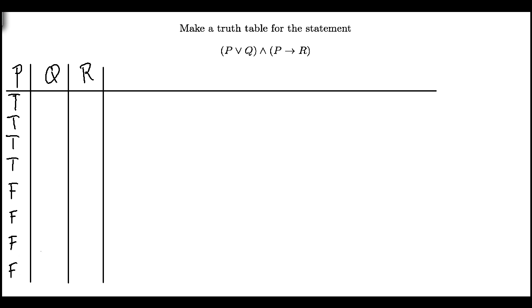Now I'll move one column to the right, to Q's column, and I'll alternate again trues and falses, but more frequently. So I'll do two trues and then two falses, and then switch to two trues and two falses.